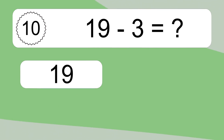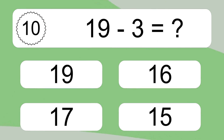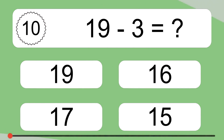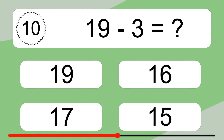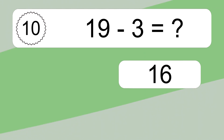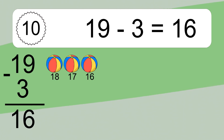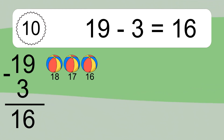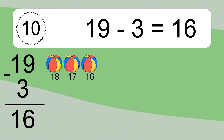19 minus 3 equals what? 19 minus 3 equals 16. Let's count it: 18, 17, 16.